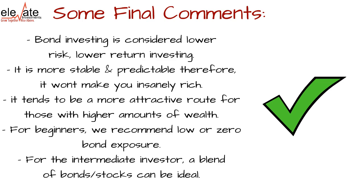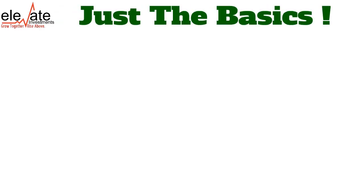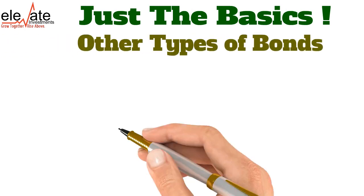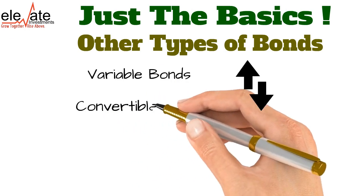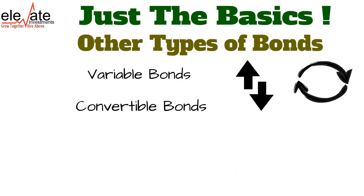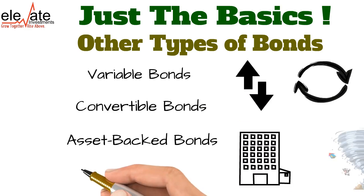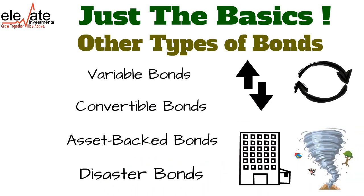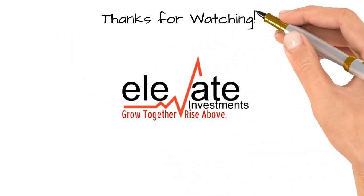This video was just to cover the basics of a bond — not all bonds are structured this way. The plain vanilla bond is just one type. Other bonds include variable bonds where interest rates change with the market, convertible bonds where you can convert the bond into equity or stocks, asset-backed bonds backed by assets such as a mortgage, and disaster bonds insured against events like hurricanes or tsunamis. There are so many bonds in the market and you really need to spend a lot of time to understand them all. Thank you for listening and I hope you have a nice day.